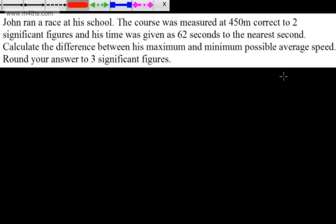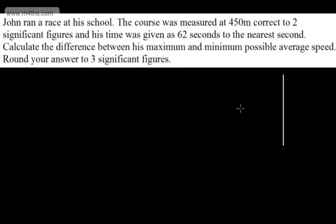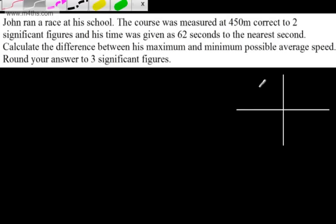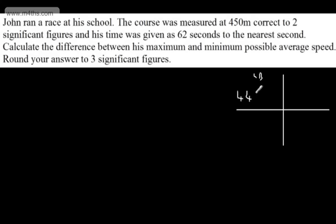and I like to do these in a table. I'm going to have the upper and lower bound for the distance and the upper and lower bound for the time. Starting with the distance, which is correct to two significant figures, the lower bound will be 445 meters and the upper bound will be 455 meters. For the time, which is to the nearest second, the lower bound will be 61.5 seconds.